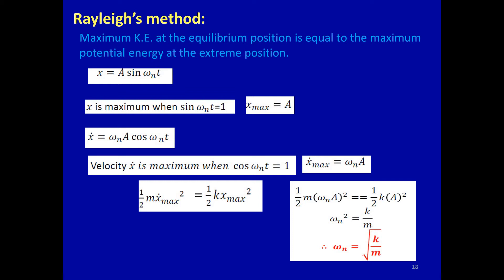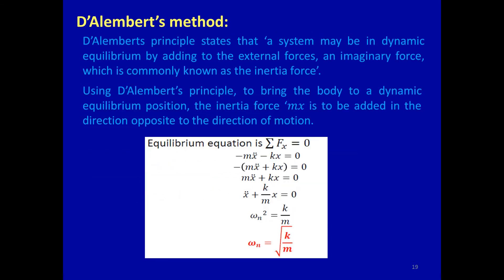From Rayleigh's method, we obtain ω_n = √(k/m), as indicated in red on the board. Always remember: whenever you need to calculate the natural frequency ω_n of a structure or component, the formula is ω_n = √(k/m), where k represents stiffness and m represents the mass of the component.